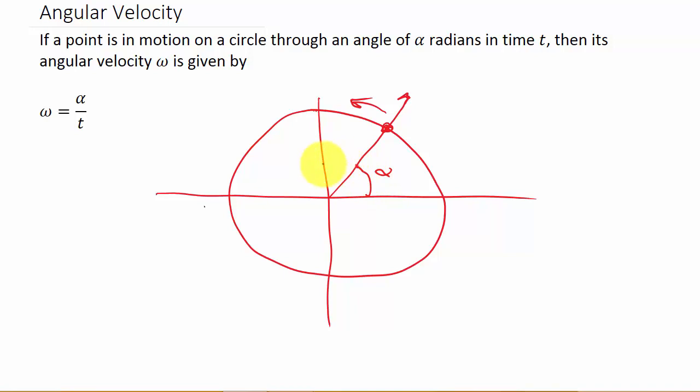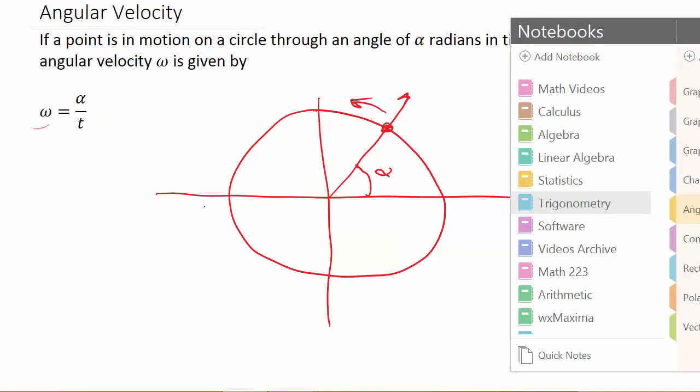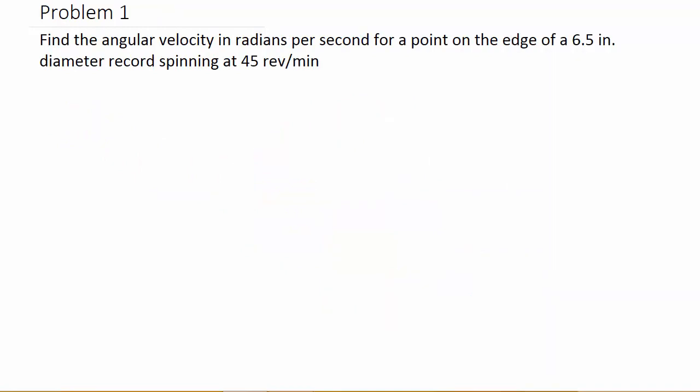It's how fast is that angle changing. And the angular velocity is given in radians per and then whatever unit of time: radians per second, radians per minute, radians per hour, just whatever they're asking for. So let's take a look at our example. Just remember angular velocity is just alpha over t. Here's alpha and t is the time.